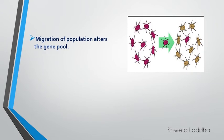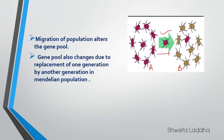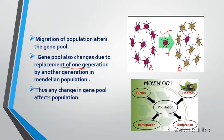Now let us see how the gene pool is affected. Migration of a population alters the gene pool. Suppose this is population A and this is population B — this red beetle is leaving population A and entering population B. When one organism leaves one population and enters another, it changes or alters the gene pool of both populations. Similarly, birth of new individuals and death also cause change in the gene pool. Immigration adds individuals and changes the gene pool; emigration removes individuals and also changes the gene pool.